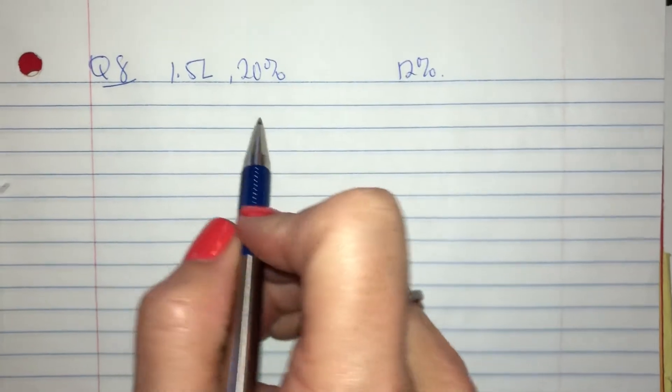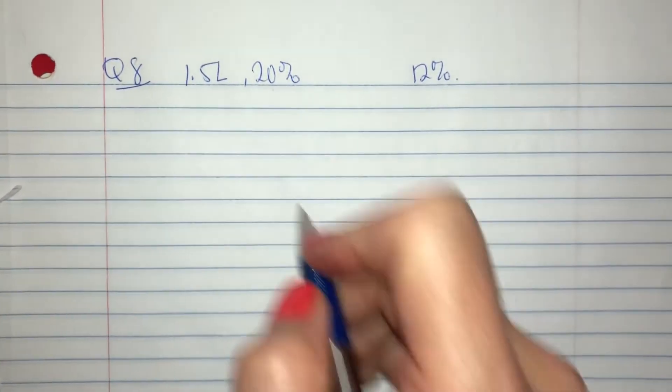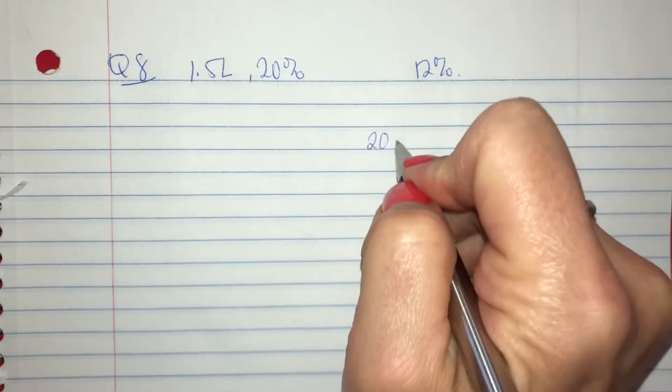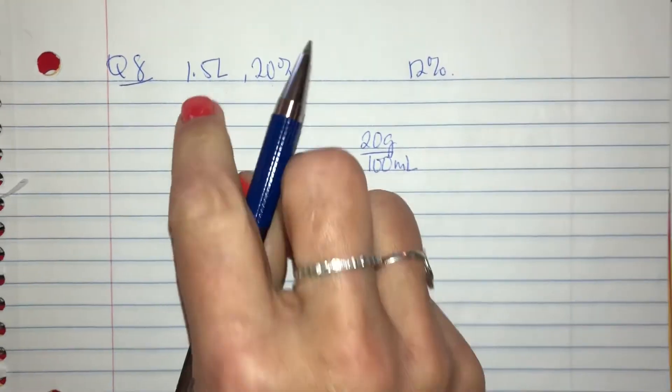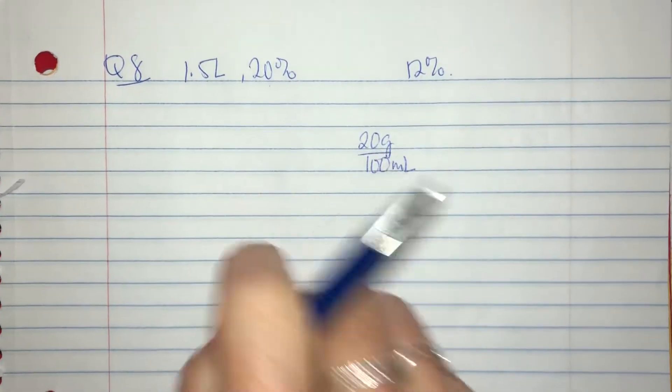So I'm going to take what I know and what I know is I have a 20% solution which is 20 grams per 100 mils and I know that I have 1.5 liters of it.